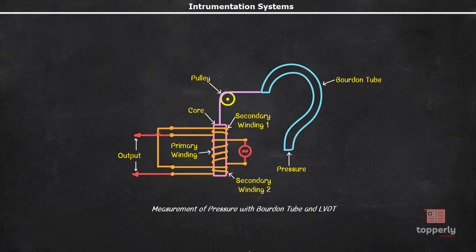But the output of it is displacement. That is, when pressure is applied, the tip of the Bourdon tube gets displaced by some amount. However, this displacement cannot be fed to a digital instrument. So what we do is, using a pulley and string system, we transfer this displacement to the core of an LVDT.